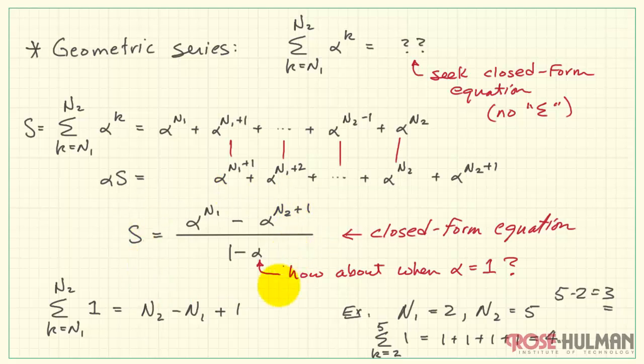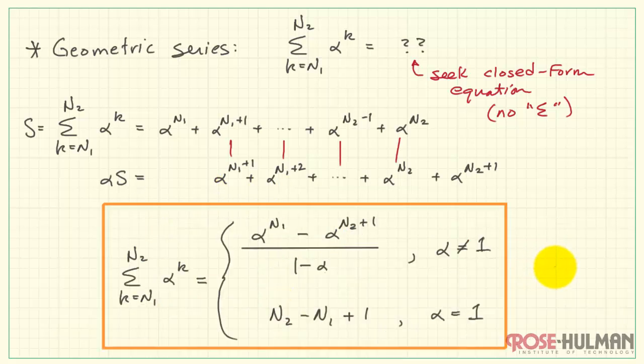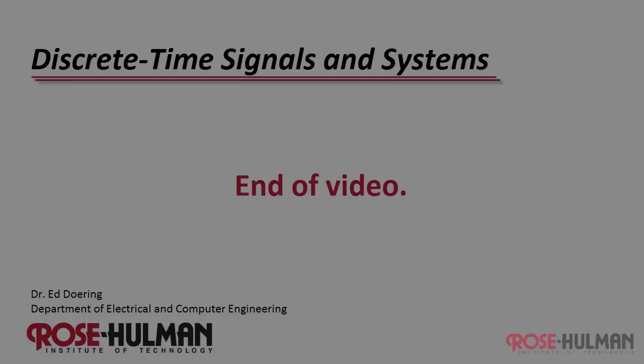Let me consolidate that with our earlier results. This gives us the finished form — the closed-form equation of the geometric series.